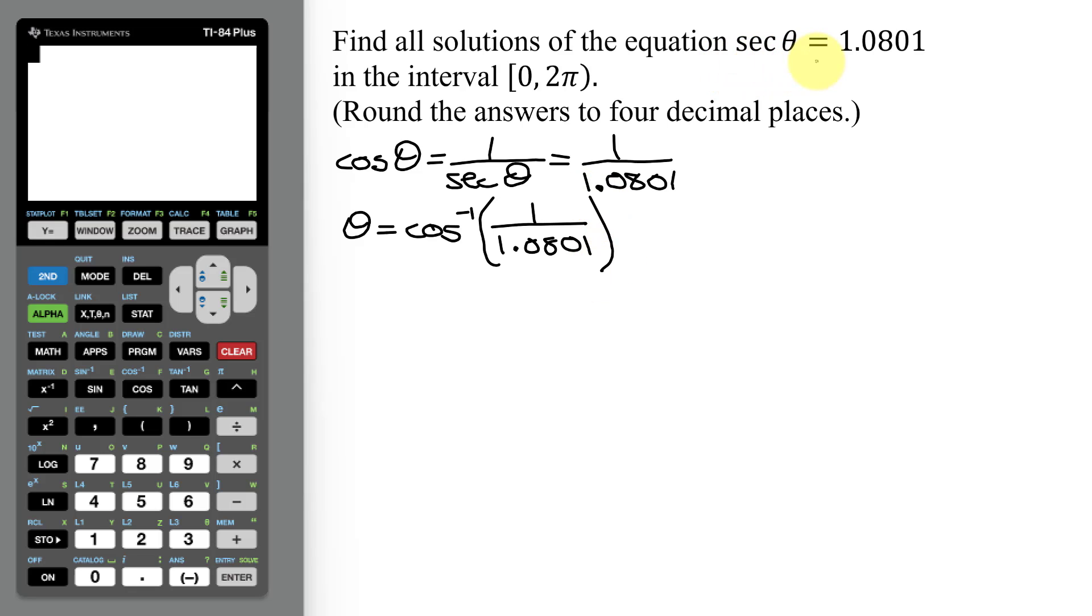Now remember, the secant of theta equals 1.0801 is an equation with an infinite number of solutions. I only need those in the interval 0 to 2π. But this equation here, by definition, only has one solution, and it has to be somewhere between 0 and π, either in quadrant 1 or quadrant 2.